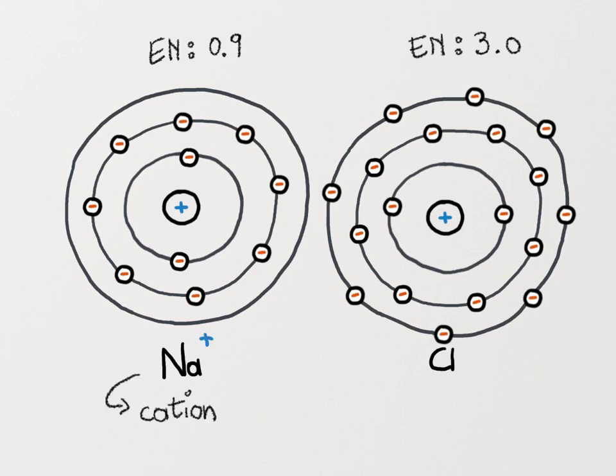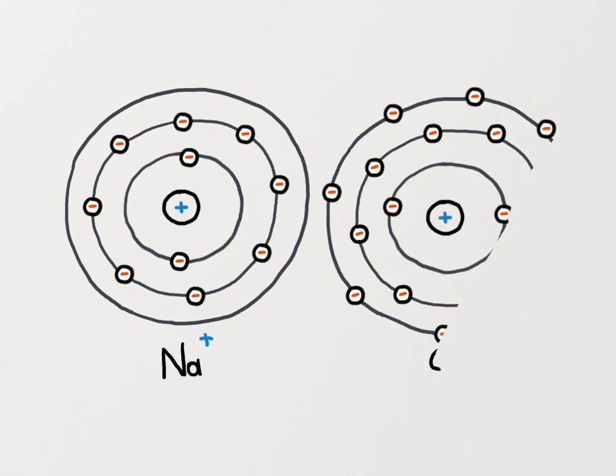Once an atom loses an electron, we call it a cation. The atom that gains electrons, in this case the chlorine, achieves a negative charge. We call it an anion. Of course there's a coulombic attraction between oppositely charged ions and this can result in very strong bonds. Ionic bonds are actually the strongest type of bond.